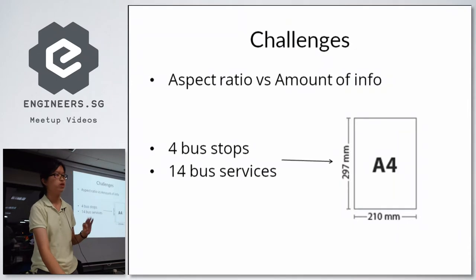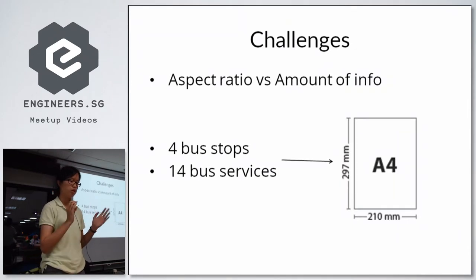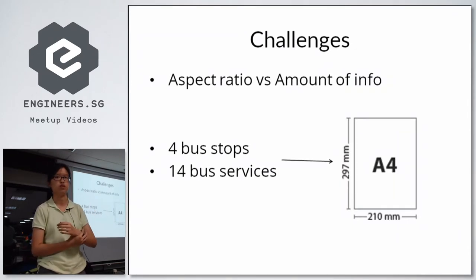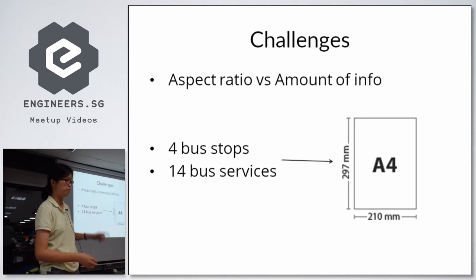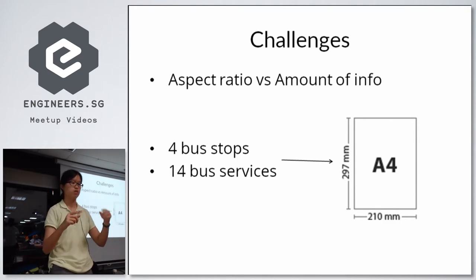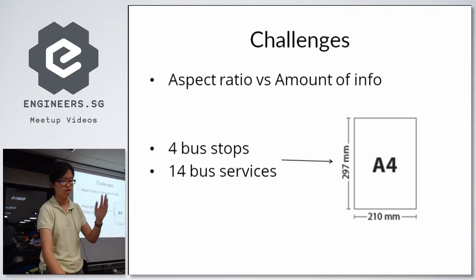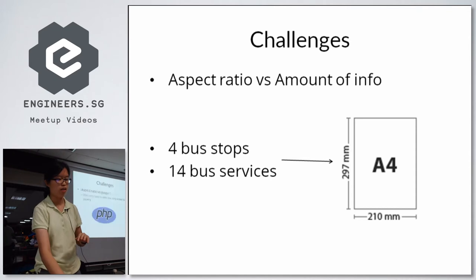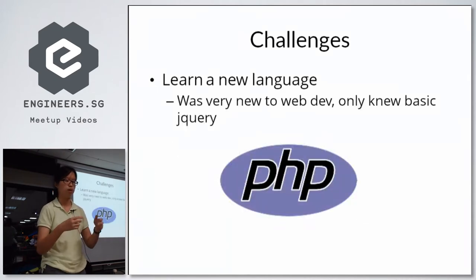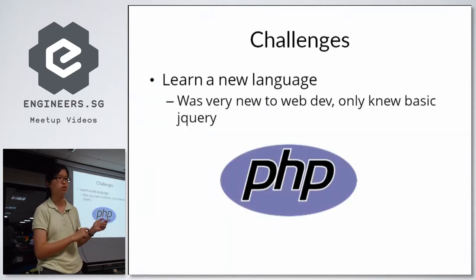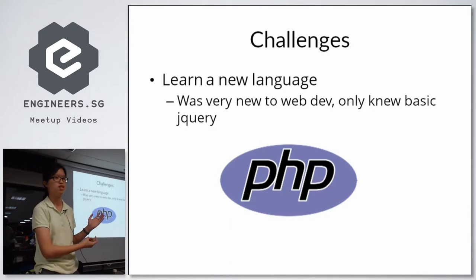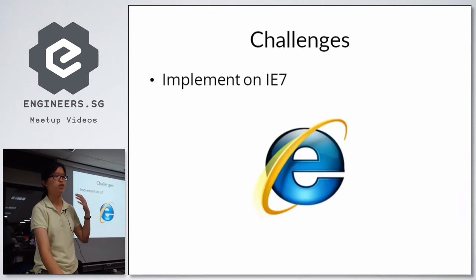There were three main challenges I faced when trying to come up with a redesign. Firstly, the aspect ratio — we had to work with a ratio of about A4, which was quite hard because we had four bus stops and a total of 14 bus services, and we wanted to display as much information as possible. Next, I was very new to web development at the time — about two years ago — I only knew jQuery, and they required me to write this in PHP. And the last and worst challenge was it had to be implemented on IE7.